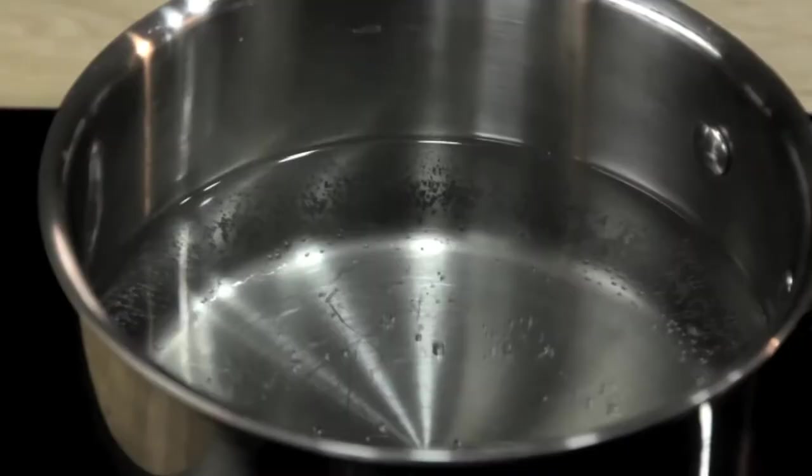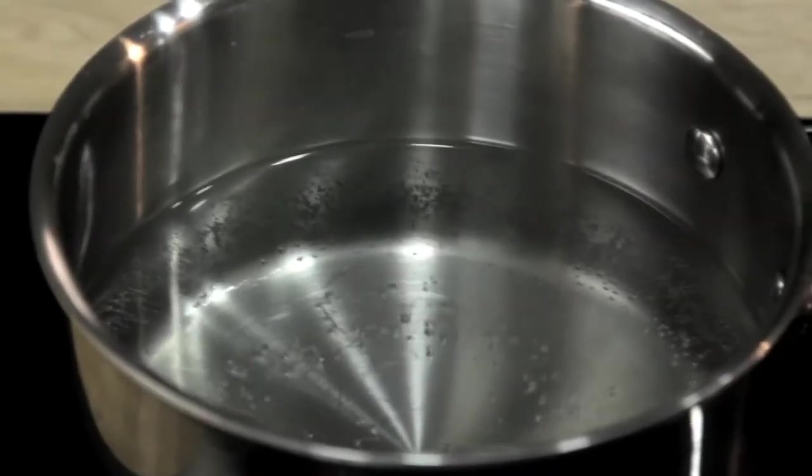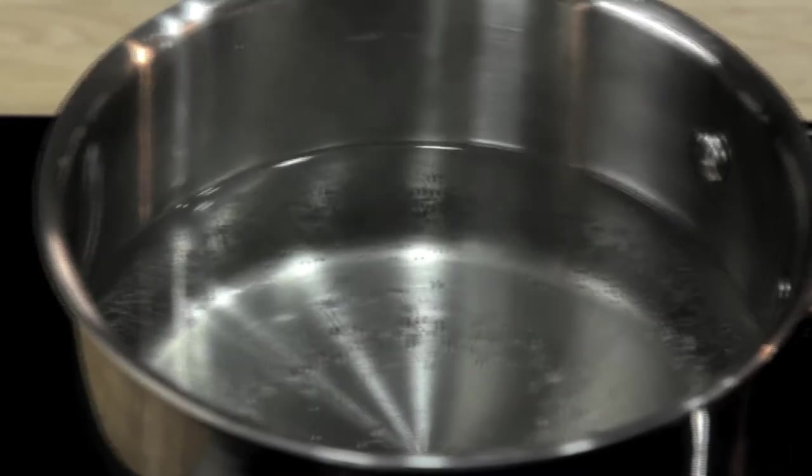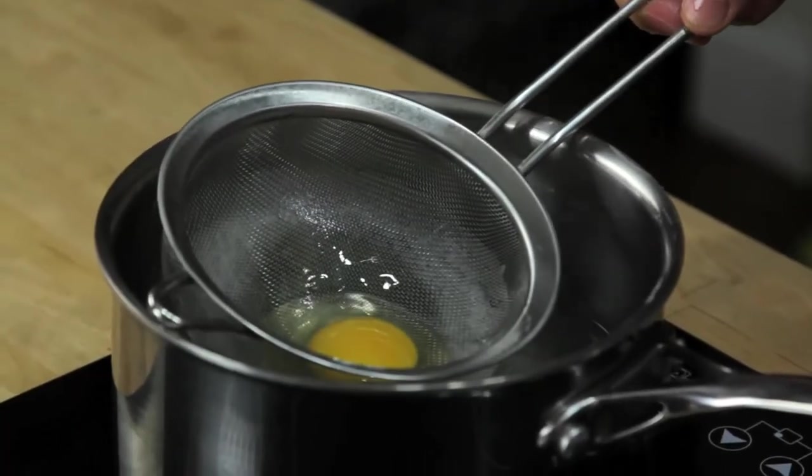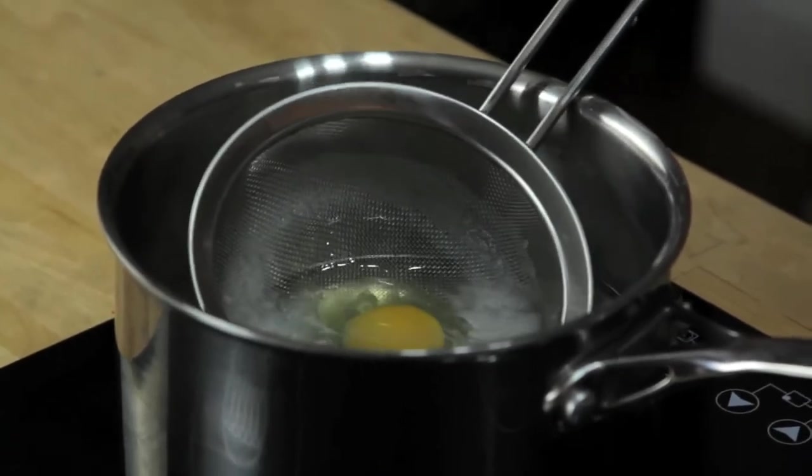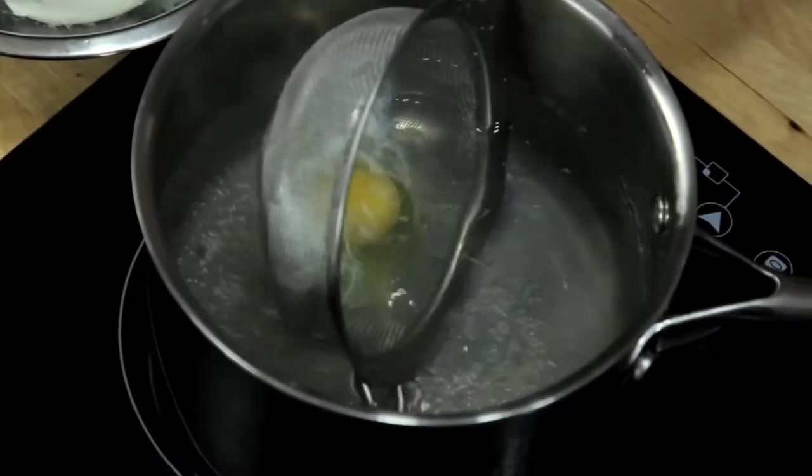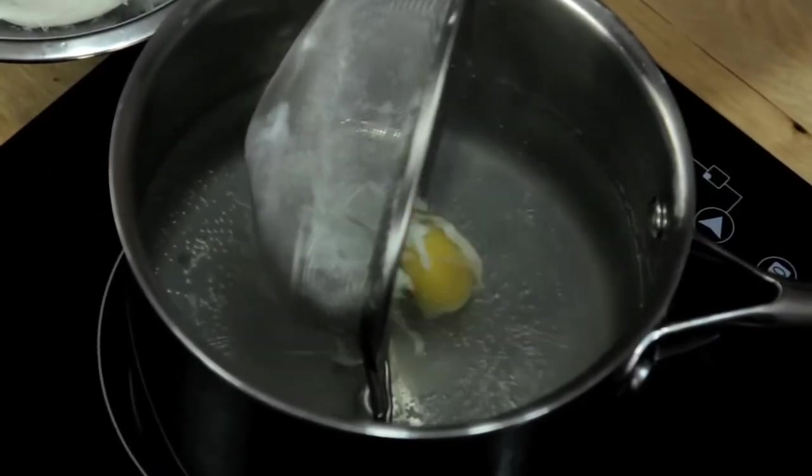Even better is that the strainer is actually the ideal tool for lowering the egg into the water. What I've got here is a pot of water at 180 degrees Fahrenheit, which is just about the temperature that the water is quivering but not quite simmering yet. All I'm going to do is gently lower the strainer with the egg into the water, move it back and forth a little bit to make sure the egg isn't stuck, and then carefully roll the egg out.